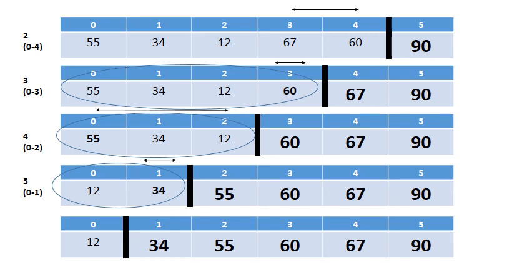remember there's six elements in the list, the last one, 12, will automatically be in the correct position. So you only need five passes if there's six elements, or count minus one passes if there are count elements in the list.